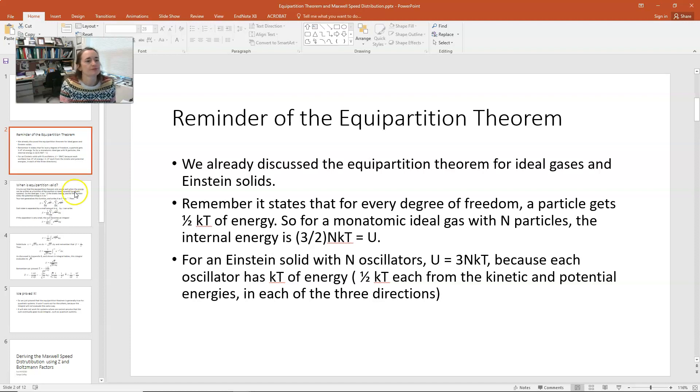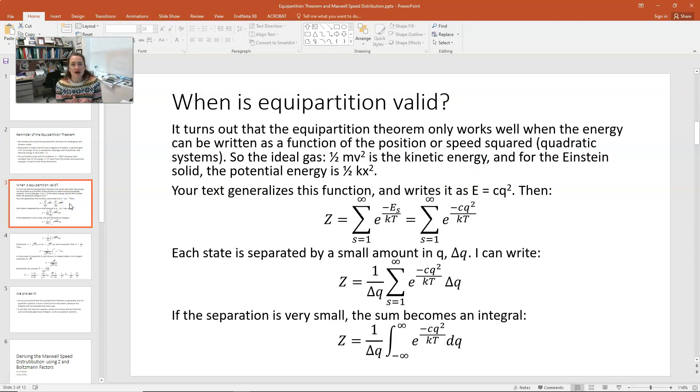We've been using this theorem for quite some time, but now let's prove that it's generally true and prove when it's true. It turns out that the equipartition theorem only works well when the energy can be written as a function of the position or the speed squared, and this is a quadratic system. So for the ideal gas, for example, 1 half mv squared is the kinetic energy, so it's a constant times the speed squared. And for the Einstein solid, your potential energy is 1 half kx squared. So it's the same kind of form.